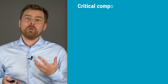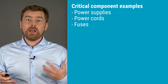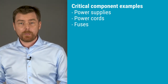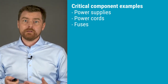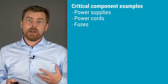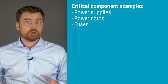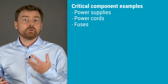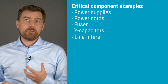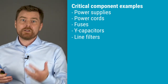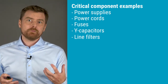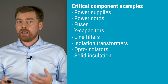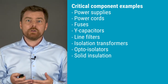Here are a few typical examples of critical components. A failure in any of these components can potentially result in a hazardous situation. A fault in the insulation barriers provided by power supplies and power cords can expose the user to electric shock. A fuse that fails as a short circuit does not limit the current to the device. A fault in a Y capacitor or a line filter can present line voltage on the chassis. A fault in isolating components such as transformers, opto-isolators, and solid insulation can expose the user to electric shock.